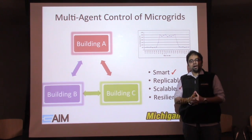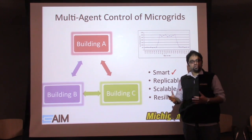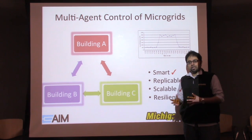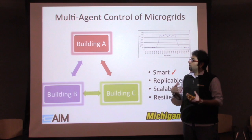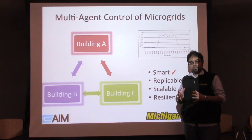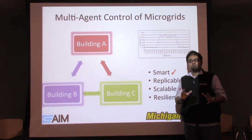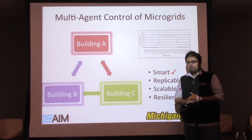Good afternoon. My name is Abi. I'm a graduate student in computer science and I work on multi-agent control of microgrids.